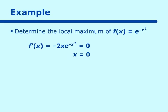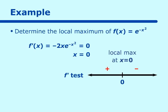Now to use the first derivative test we want to know if the derivative changes sign at x equals zero. The quickest way is with a number line type of test. Putting zero in, if we substitute a number greater than zero like 1, f prime becomes negative. If we put a negative number in like negative 1, f prime will be positive. So our function is going from increasing to decreasing, which means we have a local max at x equals zero.